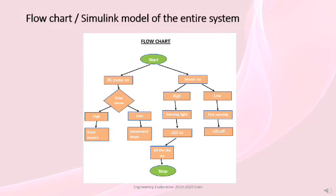The flowchart explains the working of our gaming machine. When we start the game, the DC motor and sensors turn on. When the DC motor completes one rotation in one direction, the slider completes one up and down movement, so the duck moves up and down. When the player shoots the duck with the laser pointer, the LDR senses the light and gives an indication that the duck was shot. The LED provides this indication; when the LED is off, the player may stop shooting.